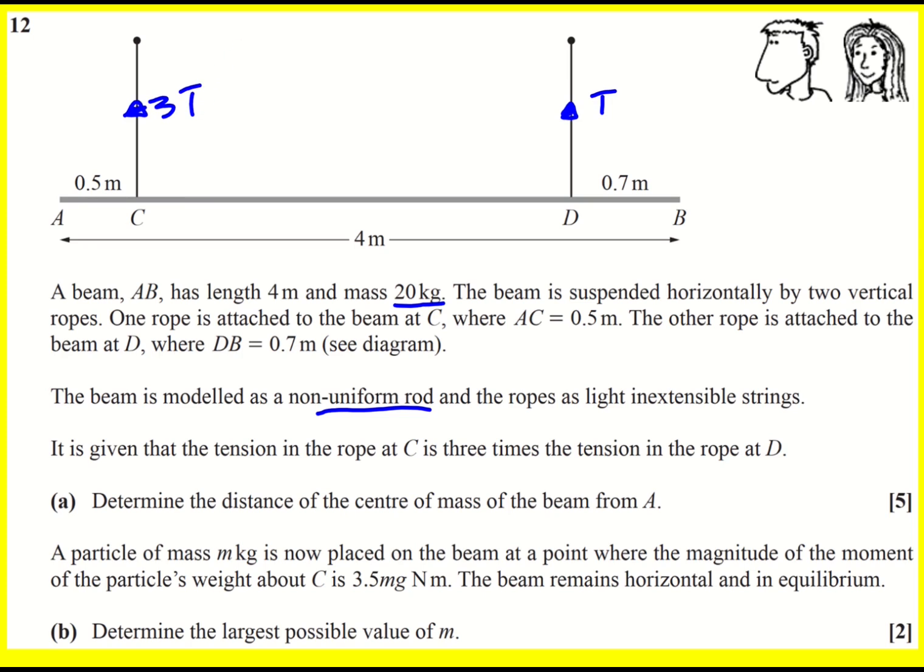Determine the distance of the center of mass of the beam from A. So it's non-uniform, it's not going to be in the middle. Actually, because the tension is bigger here, the center of mass is going to be towards it rather than away from it. But if you don't quite put it in the right place that's not a big deal.